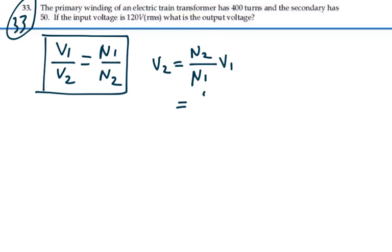So this is going to equal 50 over 400 times 120 volts RMS and that is equal to 15 volts RMS, root mean square.